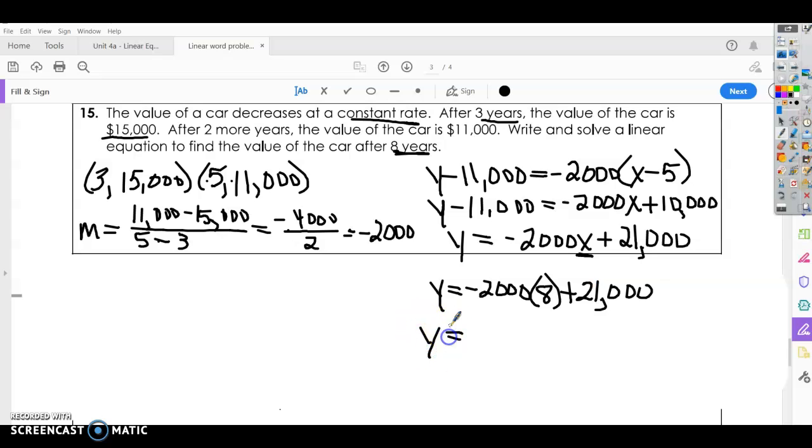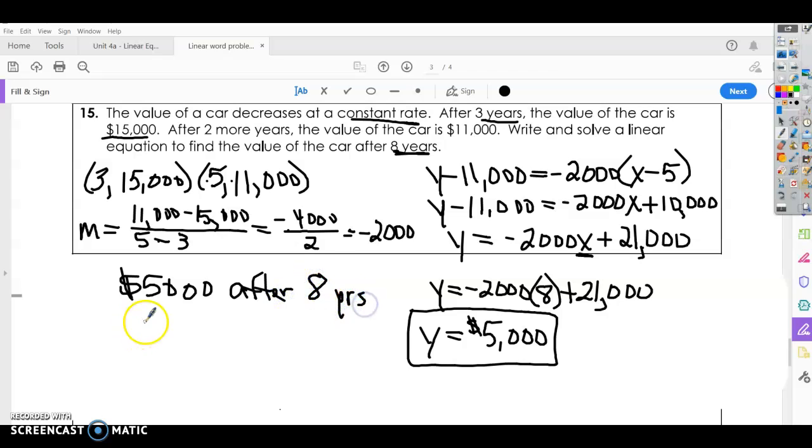Alright, plug all this into your calculator. And you're going to find out that this car is worth approximately $5,000 after 8 years. Alright, so $5,000 after 8 years. So our point would be $8,000 and $5,000. If you wanted to graph these three points, you could see that those are linear.